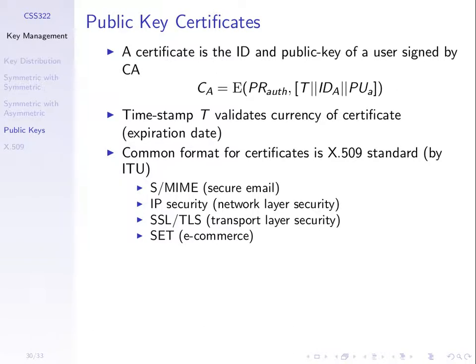What information is included inside a certificate? It includes the public key of A, the identity of A, some timestamp — because instead of having certificates valid forever, we have a time limitation on them — and importantly, it is encrypted using the private key of the authority. That allows someone to verify it if they have the public key of the authority. This comes back to trust: to be able to verify a certificate, you must have the public key of the authority and must know it is indeed the authority's public key — we must trust the authority.